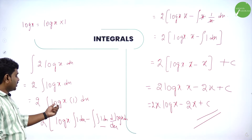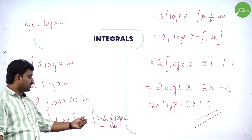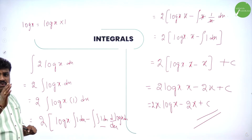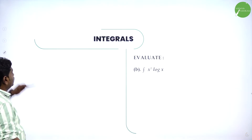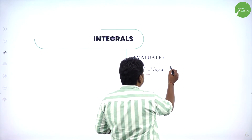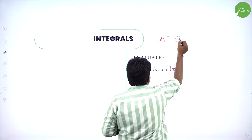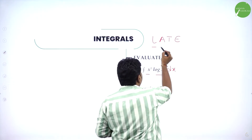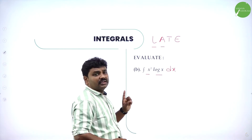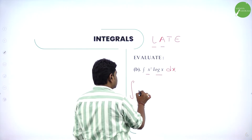So log(x) was the question; I wrote log(x)·1, product of two functions — first into integral of second minus integral of integral of second into derivative of first. Next: integration of x³·log(x) dx. There are two functions. Use the LATE code — L means logarithm, A means algebra. x³ is algebra (x power n), log(x) is logarithmic. So logarithm comes first.